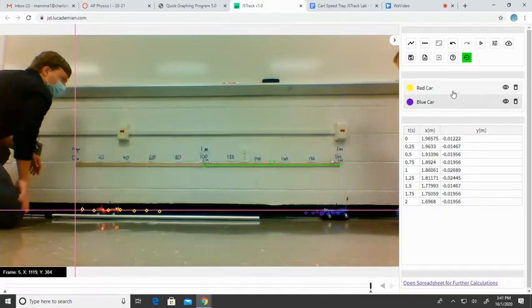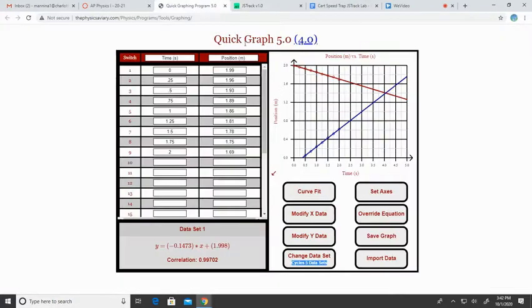Now I took this data for the red car and the blue car and I decided to put it into the graphing program. The directions to do this are online, but basically what you're going to do is just plug in the data. Once you plug in one car's worth of data and do a line of best fit, you're going to click change data set and it will let you put a new data set in there as well.